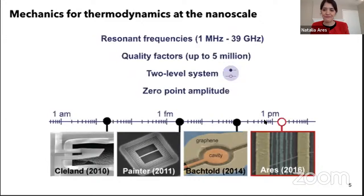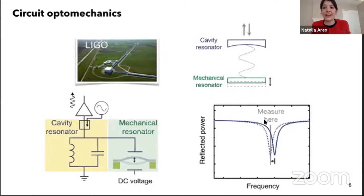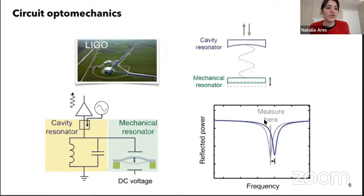Of course we need to be able to measure displacement — to probe the energy of the system directly. We need a direct probe of displacement, and we can store the engine's energy in that displacement. But we have to actually tell how much displacement there is, and this is not easy. LIGO has shown us one of the best ways to measure small displacements.